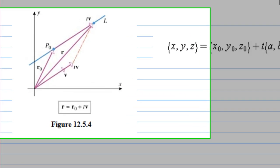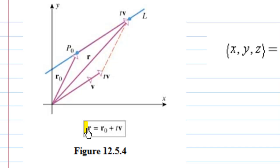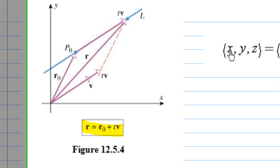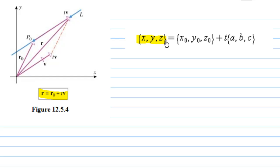You can write that in vector form as r = r₀ + tv, where r denotes the position vector of a point on the line and v = (a,b,c) denotes the direction vector of the line.